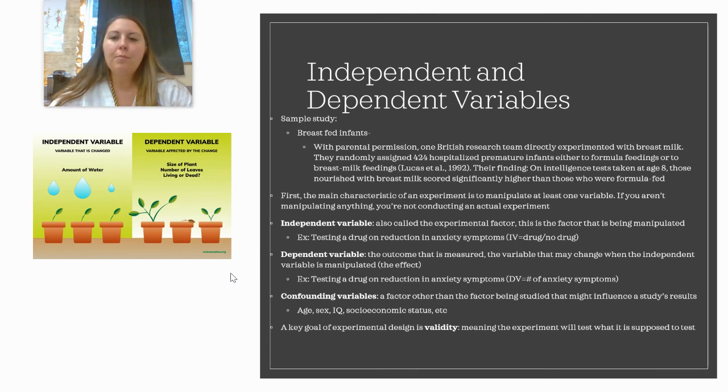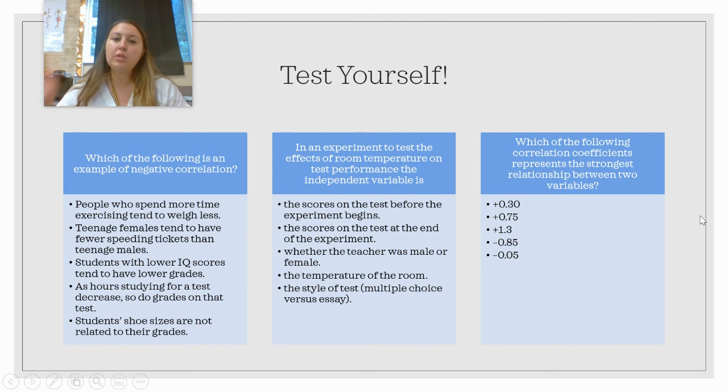There are methods that we do, like with all of these things—random assignment, blind procedures, random sampling—that helps to increase validity. I want you to apply this study and identify the independent variable and the dependent variable. We will check that together in class. And then lastly, I'd like you to test yourself on these questions, which we will also discuss in class. I'll see you later. Bye!